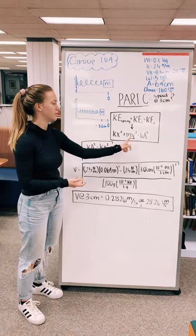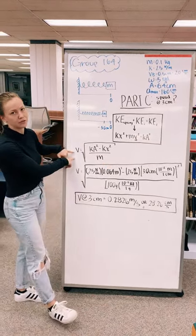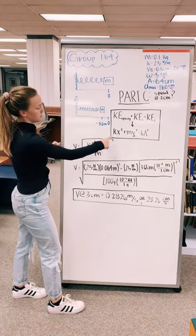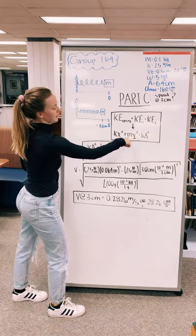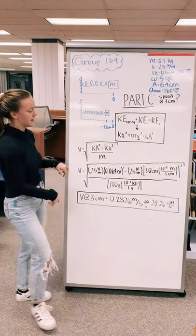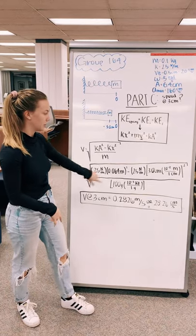When we solve for velocity we get this: we subtract this side over to here and then divide by mass, and then we plug in all of our units.